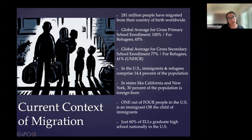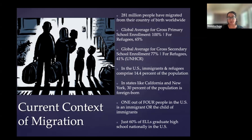There's no national data in the United States collected on newcomers, but a proxy that's used is the data we have for English language learners, which is not the same as newcomers but is the only data we can get our hands on. That data shows that just 60% of English language learners graduate high school across the country — quite a bit of disparity, and it's an imprecise proxy.